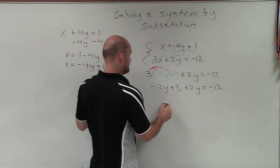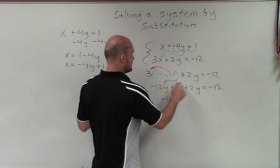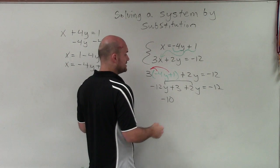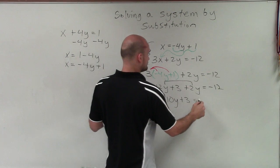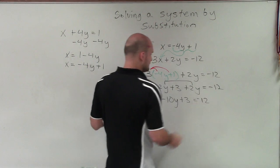Then I combine my like terms. So therefore, this becomes a negative 10. I combine my two y values. Those are like terms. So it becomes negative 10y plus 3 equals negative 12.